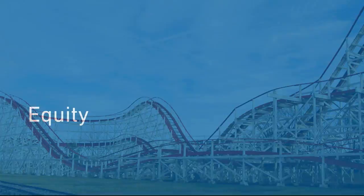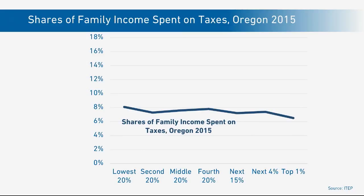Now on to the last topic of equity. Oregon has what you would call a proportional tax system. That means that families at different levels of income generally spend the same shares of their income — somewhere between 7 to 8 percent on state and local taxes. I will now compare that to the state of Washington, which is the most regressive system of taxation in the United States.